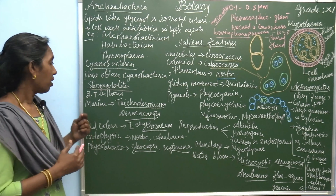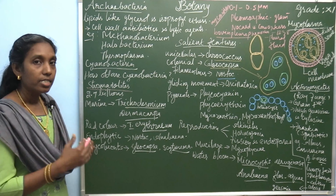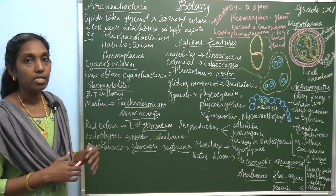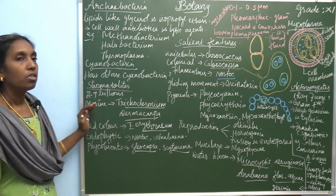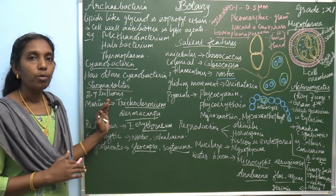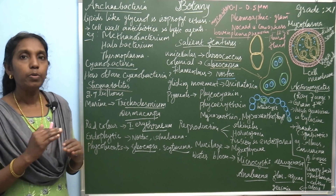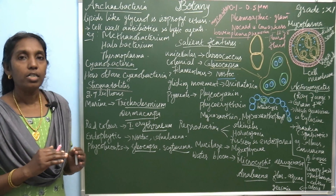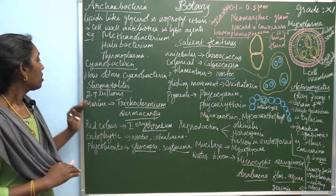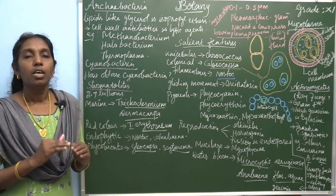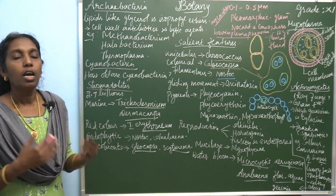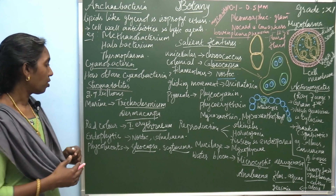Geologically, it is said that cyanobacteria existed 2.7 billion years ago, based on the deposition of stromatolites. This cyanobacteria, or blue-green alga, also called Cyanophyceae, lives in both freshwater and marine water.